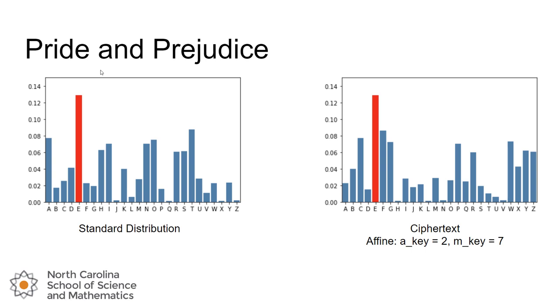Again, we could quickly spot the likely candidate for what we think E in the ciphertext maps back to, in this case also E in the standard distribution. But there's not a lot of other information just looking at this bar chart that might help us figure out what the two keys were if we didn't know them.